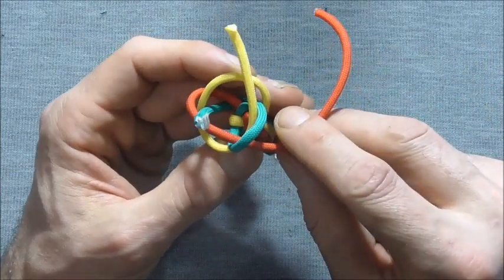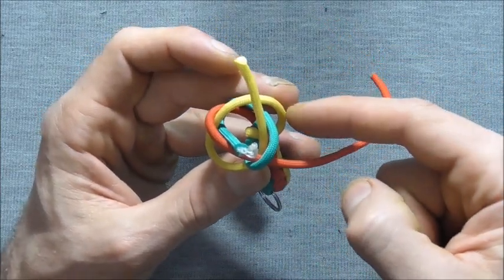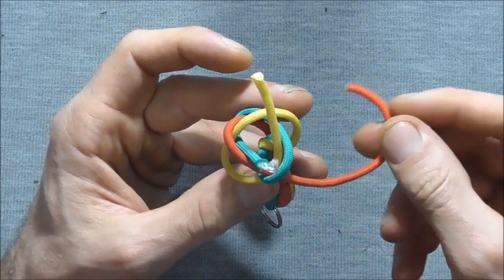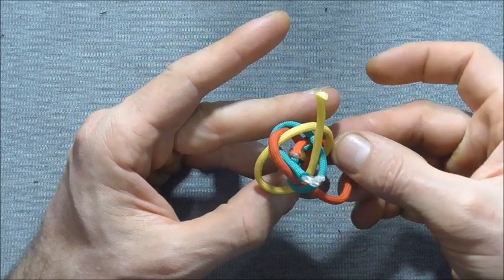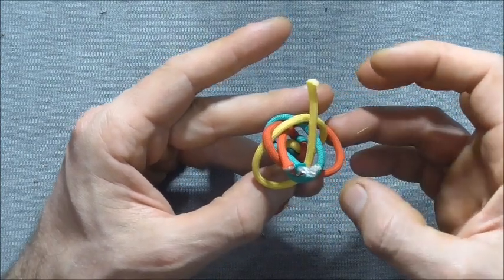And then the red will go around its adjacent strand here which is the yellow, underneath the blue, and up through the center of the knot.